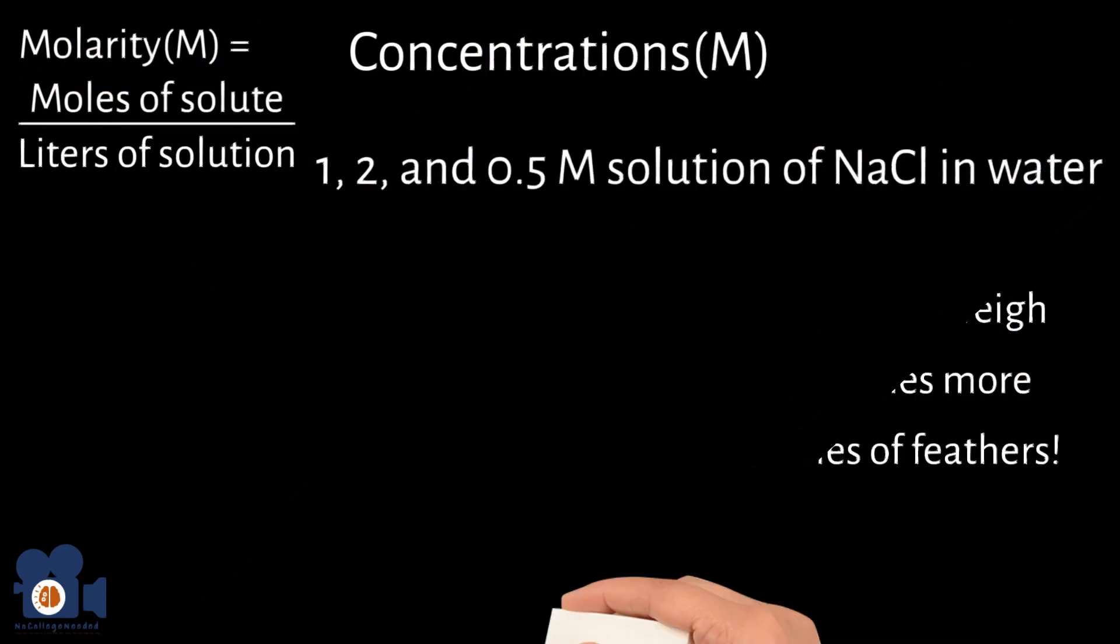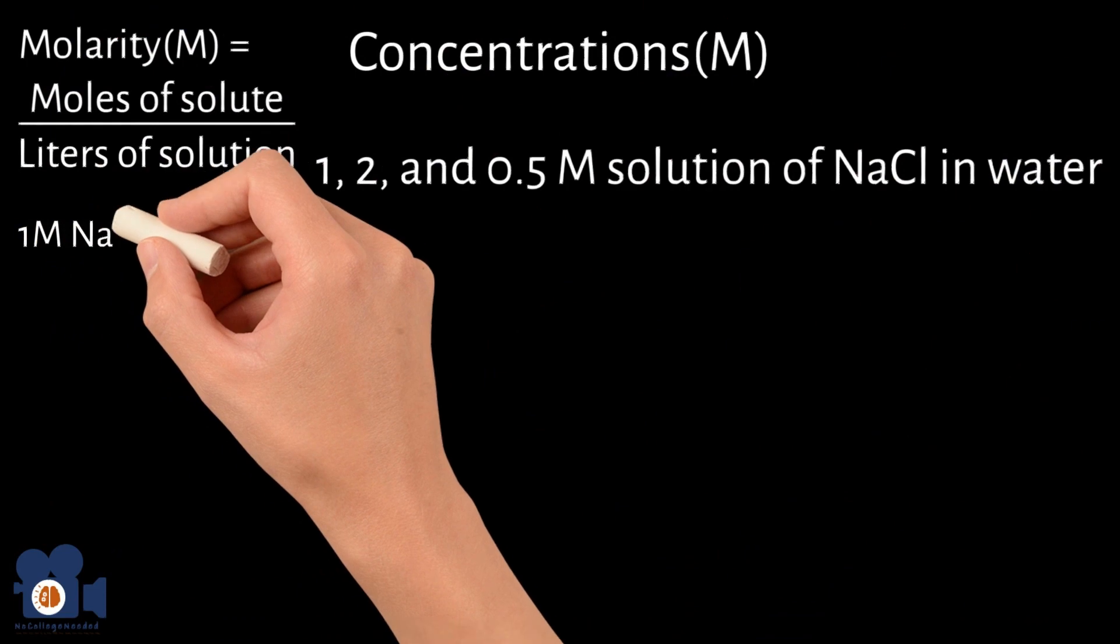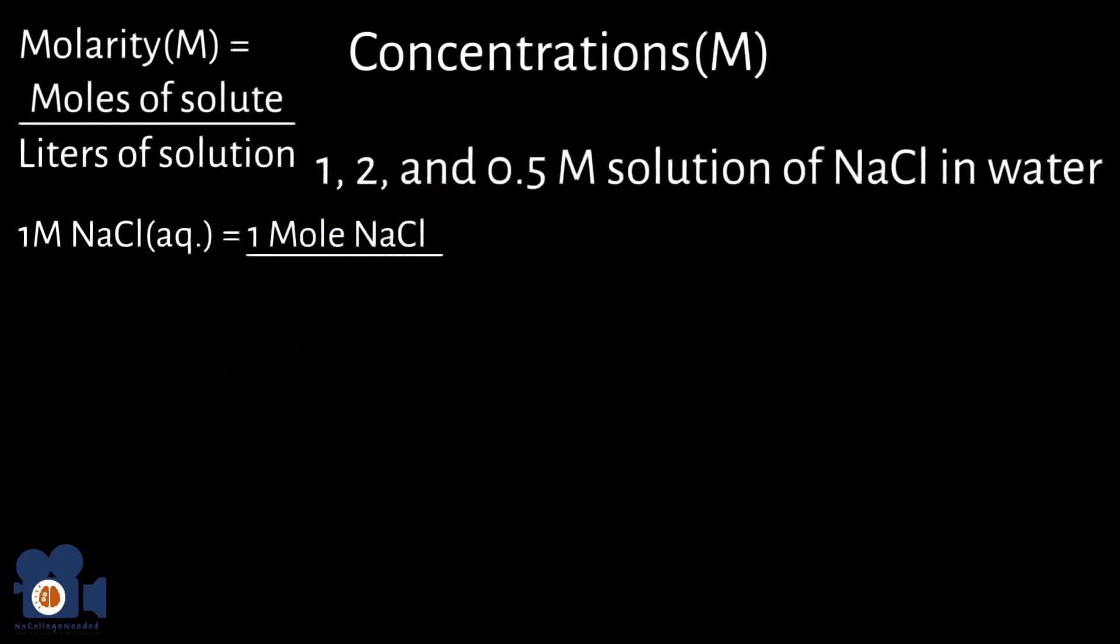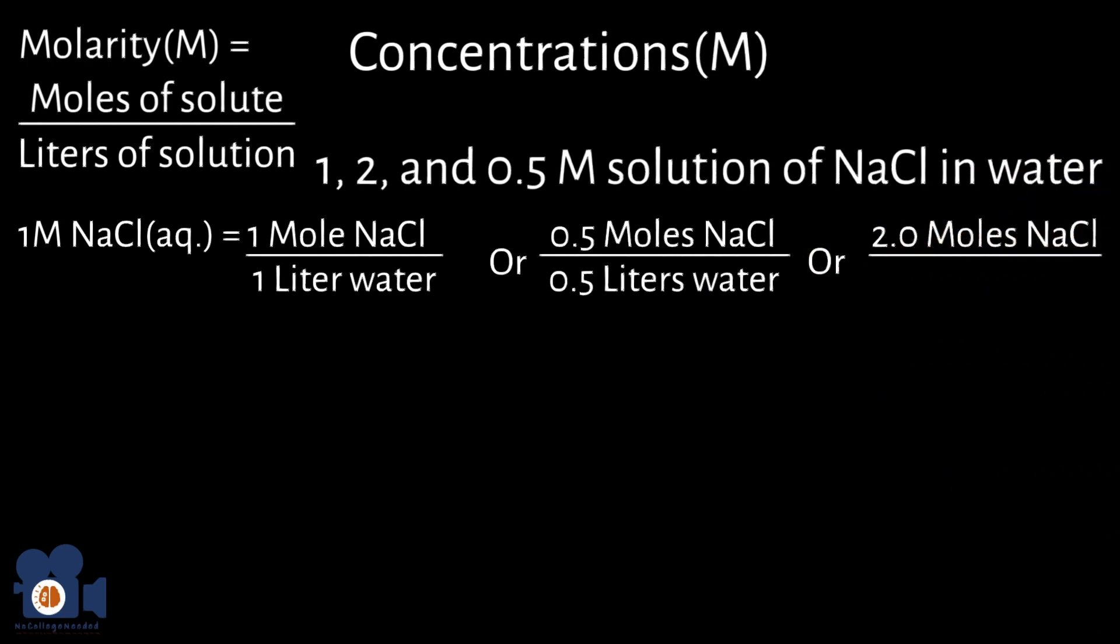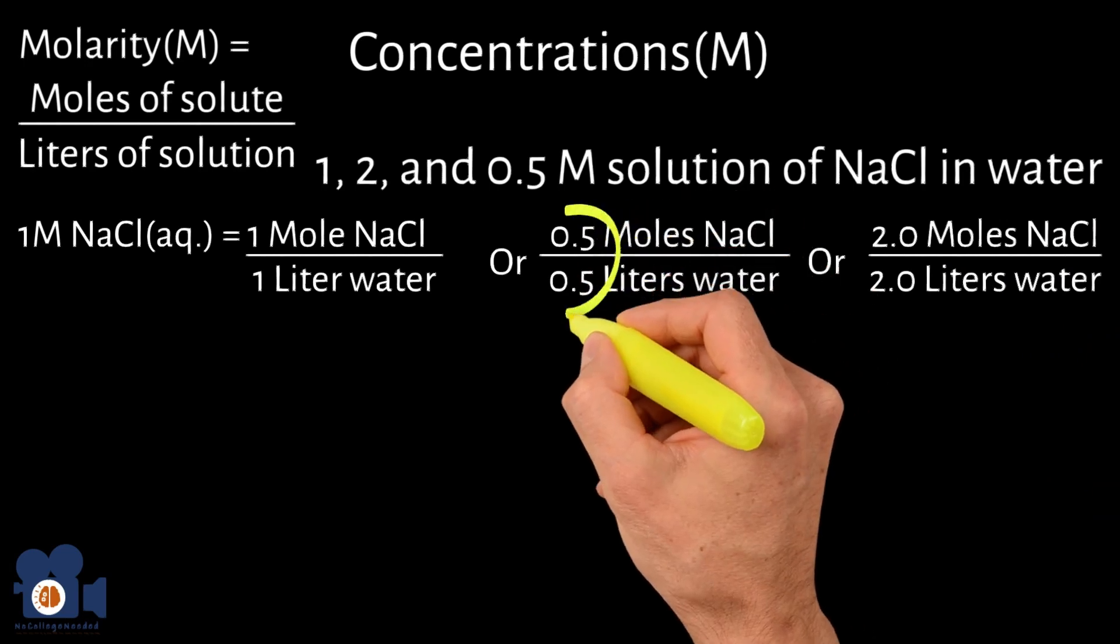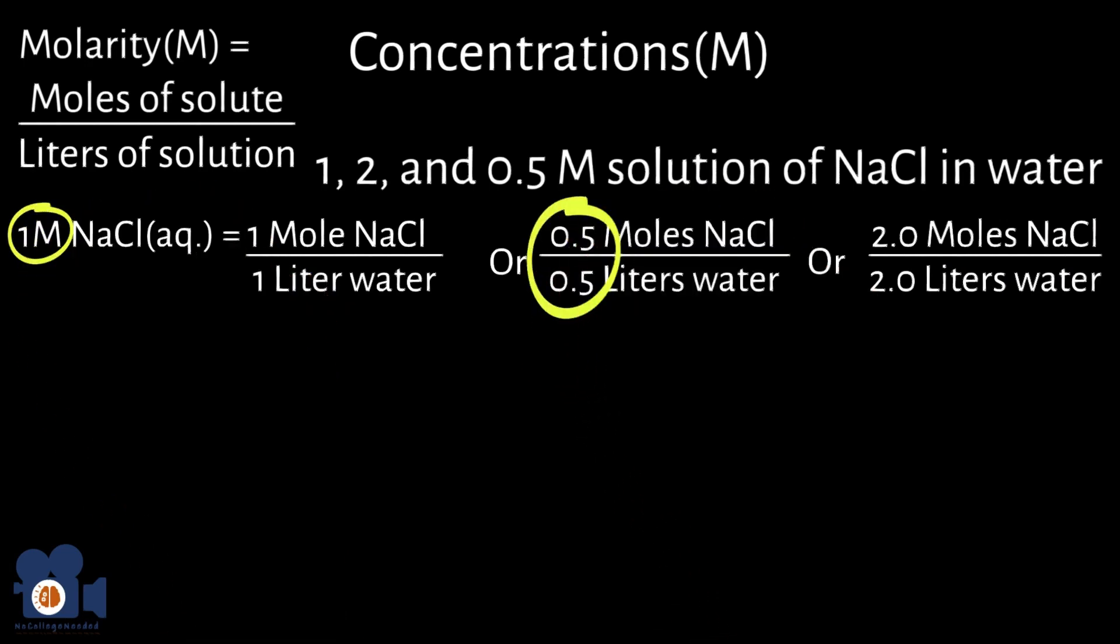A one molar solution of sodium chloride in water would have one mole of NaCl per one liter of water. This could be either with 0.5 moles of NaCl and 0.5 liters of water, one mole of NaCl in one liter of water, or two moles of NaCl in two liters of water. If you look at the math, the division all comes out to be one: 0.5 divided by 0.5 equals one, one divided by one equals one, and two divided by two equals one.